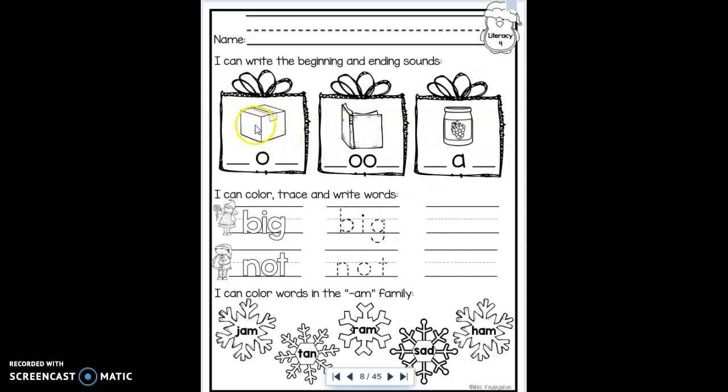The first one is a box. And so a box begins with the letter that says buh. We know that is a B. So we need to make a B. And the end sound is kss, which is made by the X. B-O-X. Box.